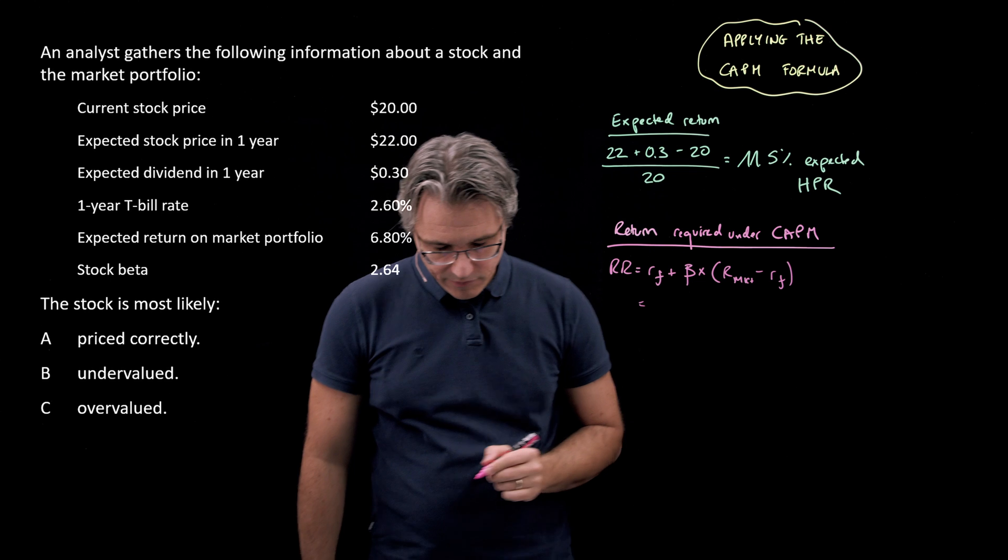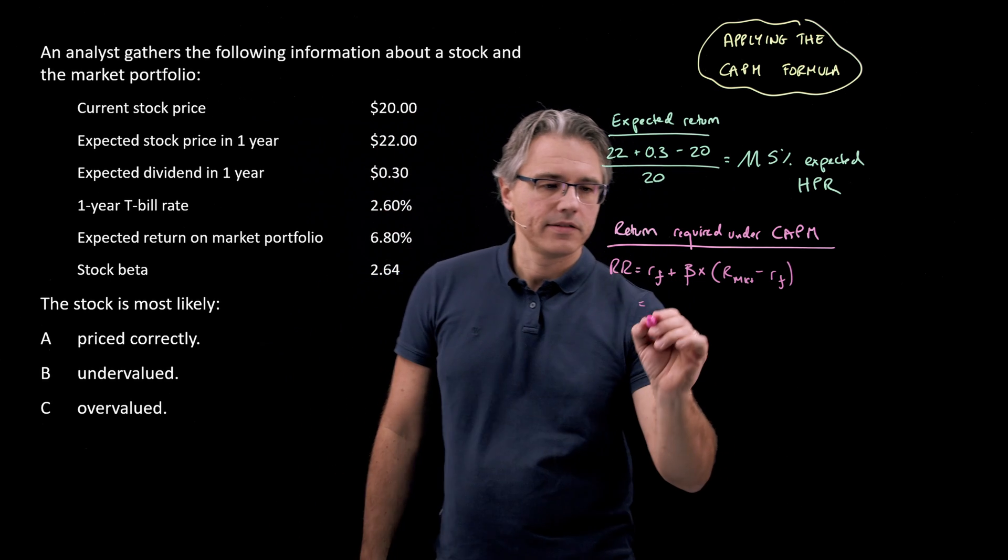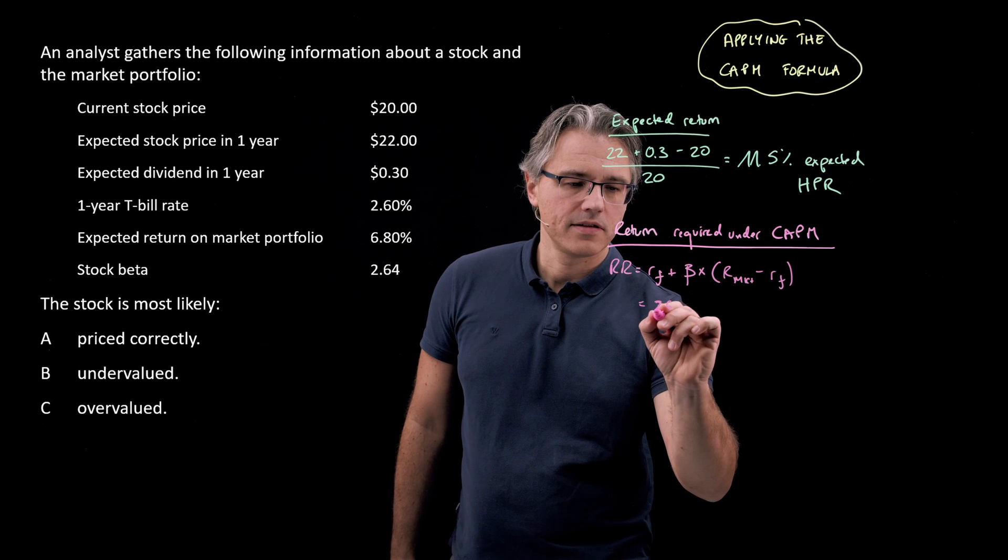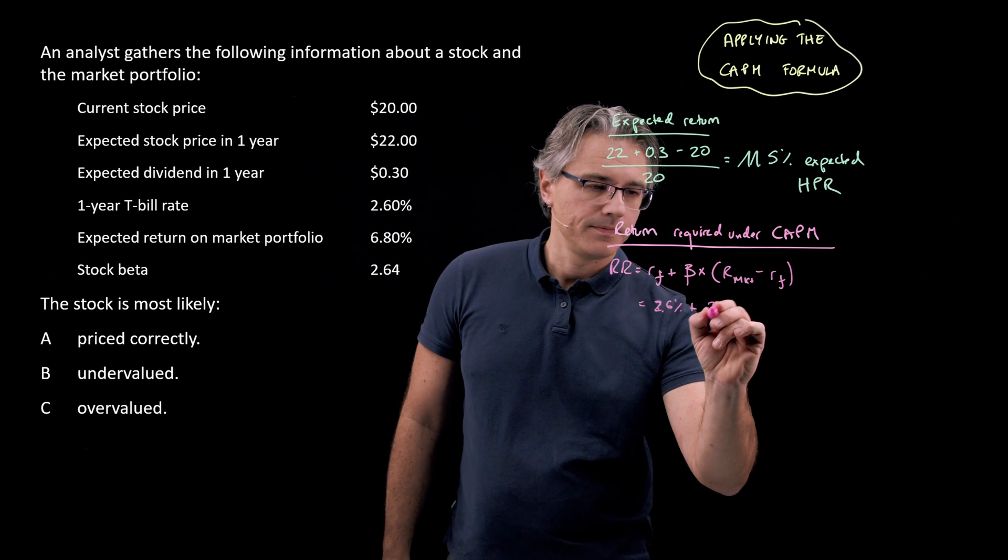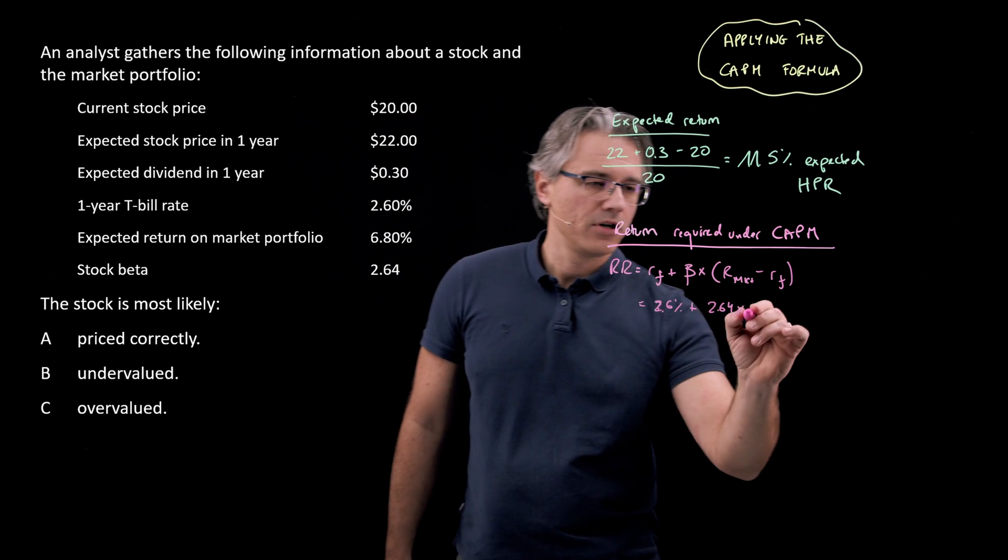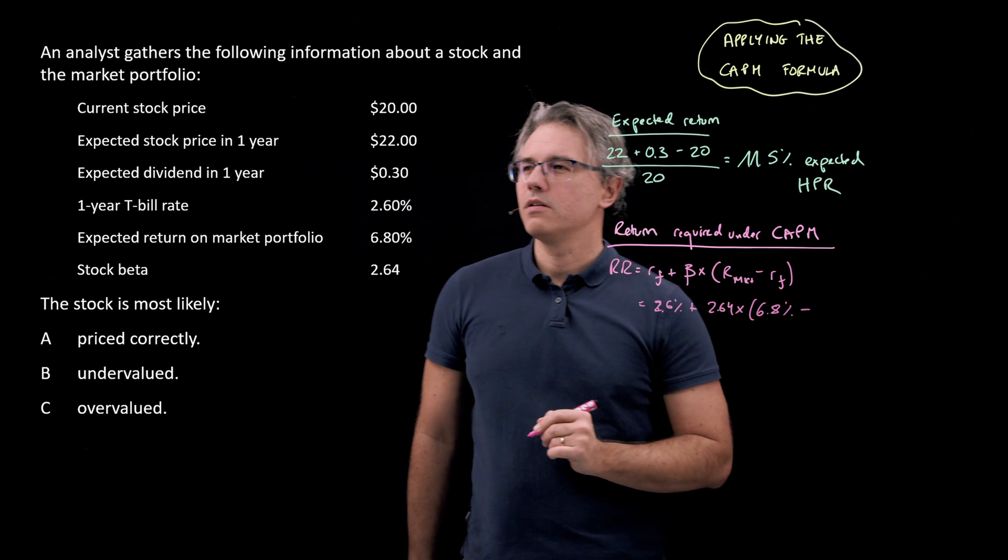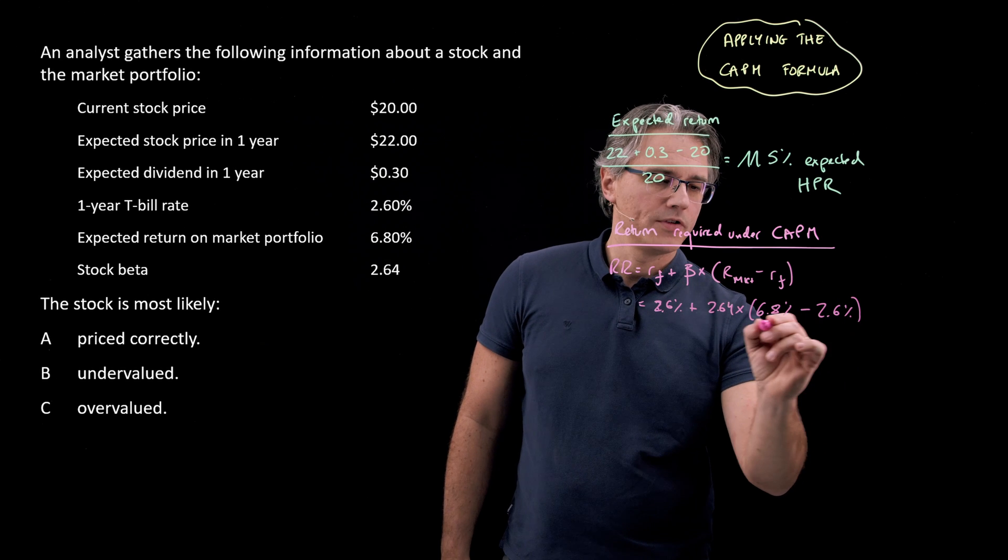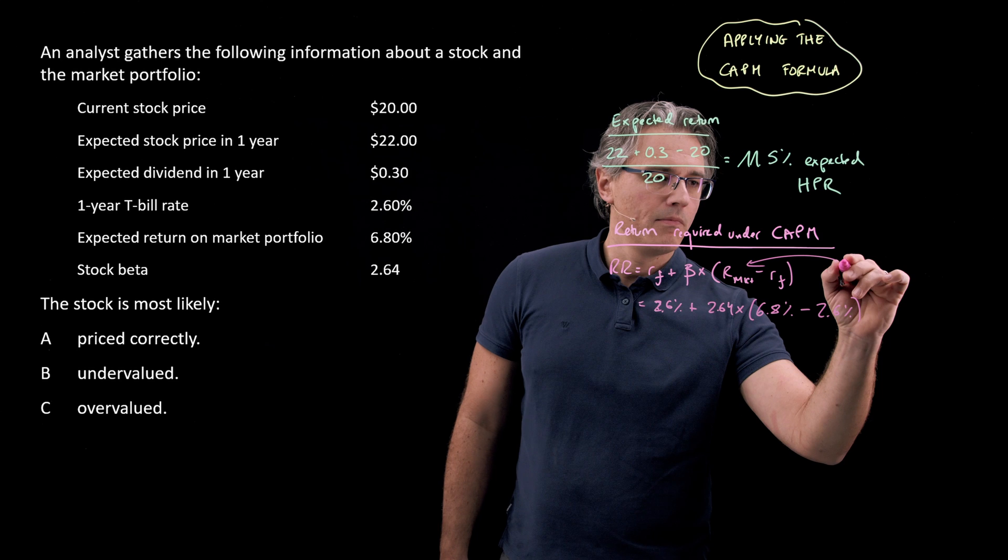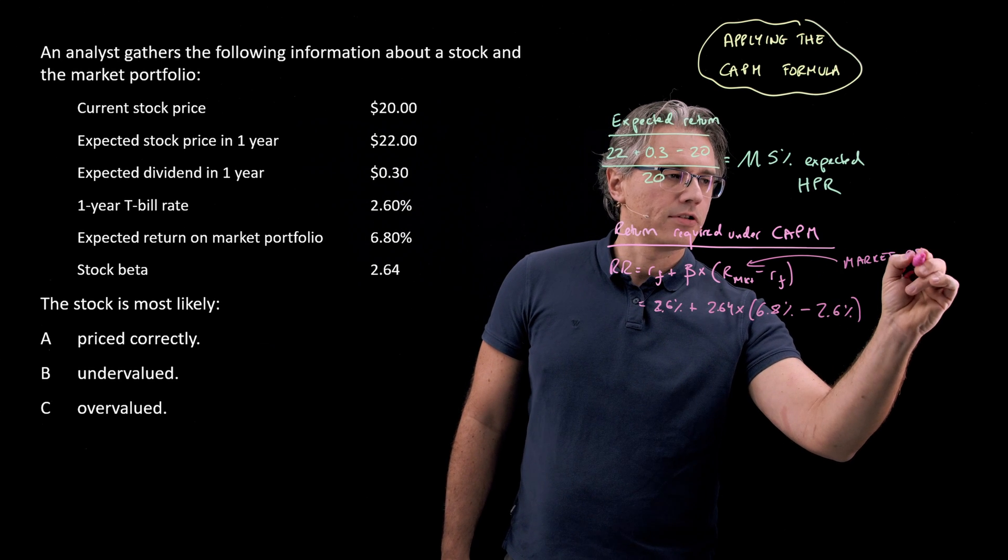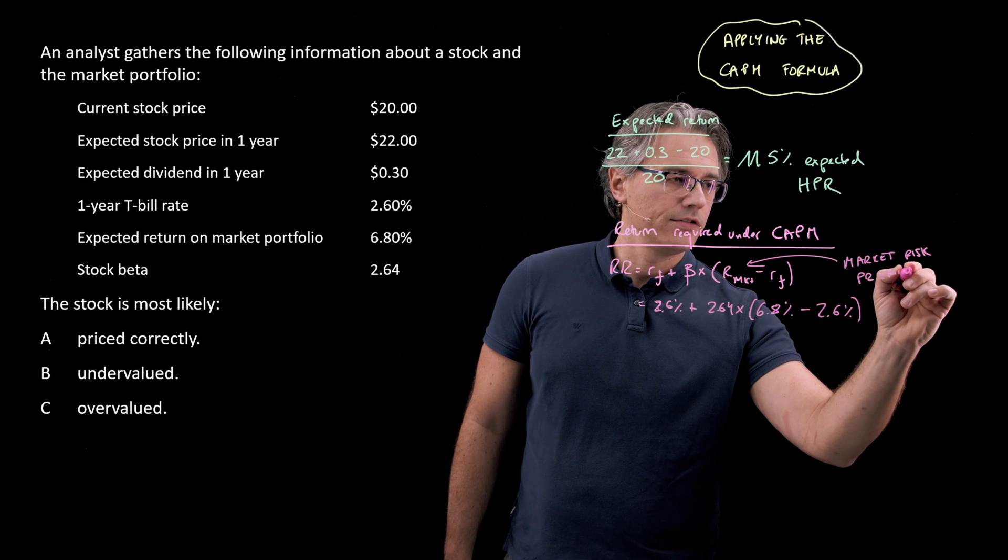Let's plug the numbers in from this question. So we've got the T-bill rate 2.6% as our risk-free rate, stock beta 2.64, times the expected return on the market portfolio—that's 6.8%—minus RF again, so that's 2.6 again. Obviously, this is known as the market risk premium, which is a term you should also know because it may be given to you just like that.